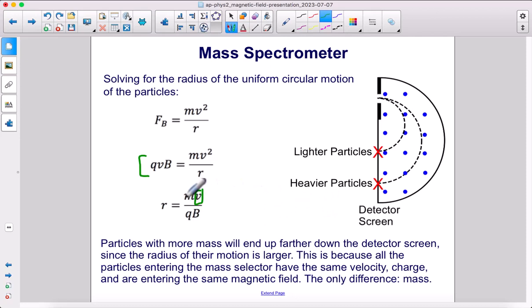Particles with more mass are going to end up farther down the detector screen since the radius of their motion is larger. This is because all the particles entering the mass selector have the same velocity, charge, and they're entering the same magnetic field. The only difference is mass. So the greater the mass, the greater the radius. Now remember, when you're solving problems like this, that's the radius, not the diameter of the circle. So if you're given where the particle lands, this distance is actually the diameter of the circle. You would have to cut it in two so that it would be the radius. So make sure you're careful about whether you're dealing with the radius or the diameter because this is the radius.